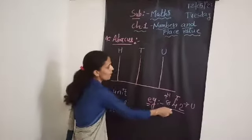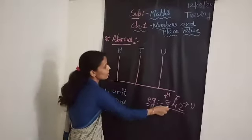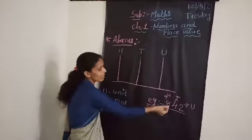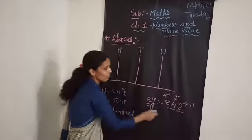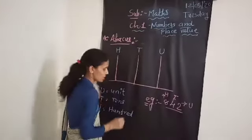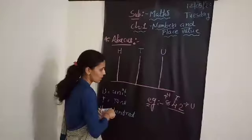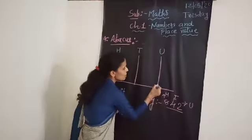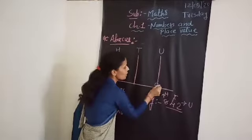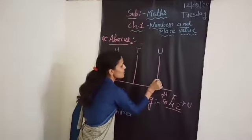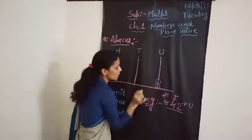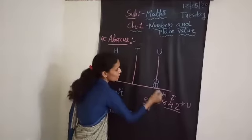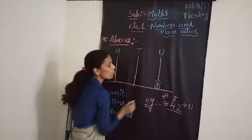Now I want to draw this number on the Abacus. First, we select the Units place. What is the number in Units? It's 2. So here we draw two beads, because it's a one-digit number in the Units column. That's why we draw two beads here.